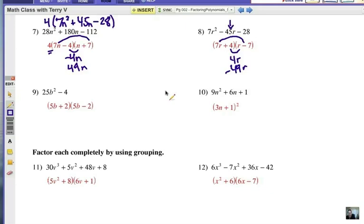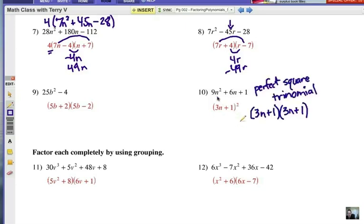This is a perfect square trinomial, which means that the first term is a perfect square, 3n times 3n, and the last term is a perfect square, 1 times 1. Now, the key here is the middle term. Is the middle term the right kind of pattern? Well, we get the 6n middle term from 3n and another 3n. So it does fit the pattern of being a perfect square trinomial. And this is its shortcut exponent form factored.